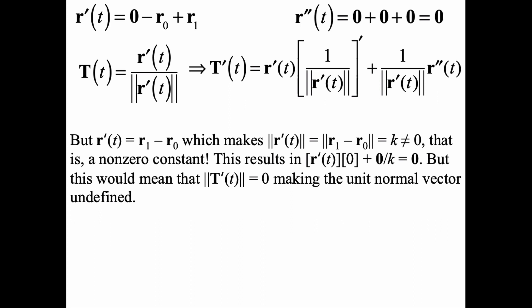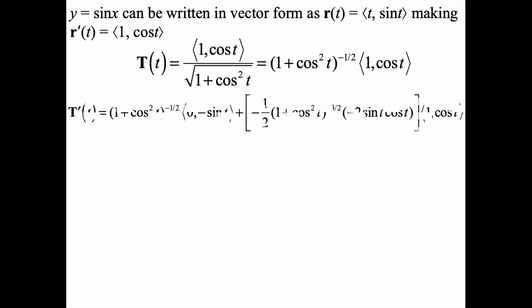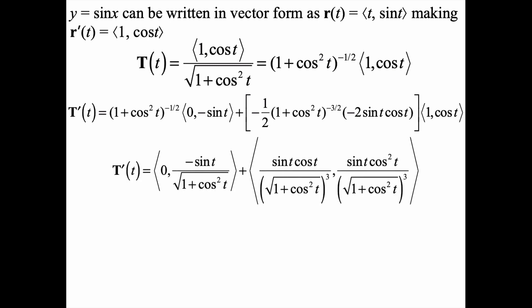Now let's get to the question of whether or not an inflection point would have a unit normal vector. Keep in mind the unit normal vector formula is T'(t) / ||T'(t)||. Let's take an example of a function that has an inflection point, like y = sin(x). We could write that in vector form as (t, sin t), making r'(t) = (1, cos t). So T(t) would be that vector over the norm, and T'(t) using the product rule structure would be all of this. After distributing and simplifying the scalar functions inward to the vector expressions, we get this expression.